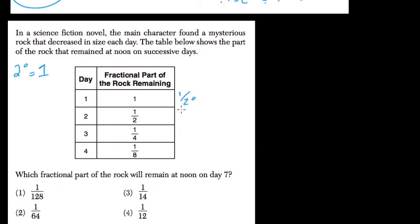So 1 over 2 to the 0, 1 over 2 to the 1st, 1 over 2 to the 2nd, 1 over 2 to the 3rd. So in the first day, it was 2 to the 0. In the second day, it's 2 to the 1st. In the third day, it's 2 to the 2nd. And in the fourth day, it's 2 to the 3rd.